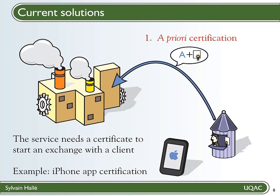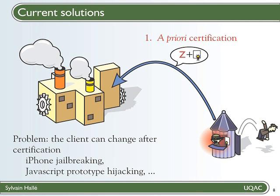An example of such a process is the certification of iPhone applications by Apple. If you develop an application for the iPhone, you must submit it to Apple, which eventually certifies it and puts it on its online store. iPhones are designed not to accept any application that doesn't come with an Apple certificate. All this is very fine, but it supposes that the client cannot change once it has been certified or that you cannot circumvent the certification mechanism, which in reality is hard to achieve. For example, for iPhones, this is called jailbreaking — it basically consists of hacking the phone's operating system so that it stops requiring a certificate to let an application run. In the case of web applications, you have JavaScript prototype hijacking that allows you to replace the application's original code with whatever you want at runtime, so that the code that has been checked is not the one that runs when the interaction with the server starts.